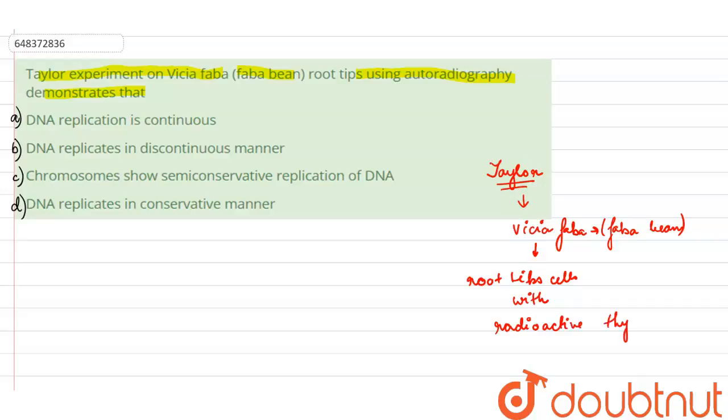He treated the root tip cells with the radioactive thymidine and then he labeled the DNA. And then what he did is, then he grew the organism or then he grew the plant in normal condition, in normal medium.